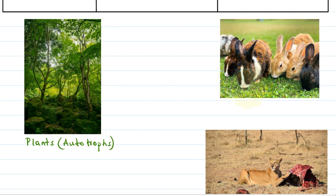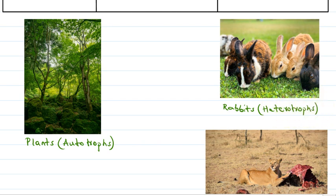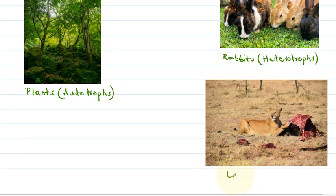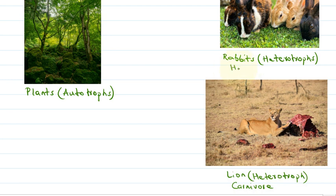Here is a picture of rabbits. They are feeding on some grasses. Rabbits are heterotrophs — they are basically herbivores which feed on plants. Then this image is of a lion, and a lion is also a heterotroph. It is basically a carnivore, as it feeds on other animals. And rabbits are herbivores which feed only on plants or plant products.